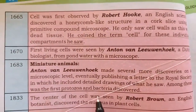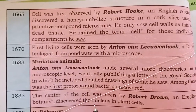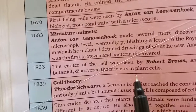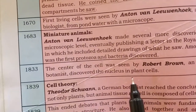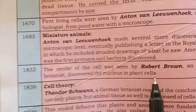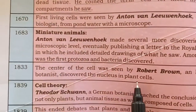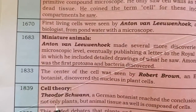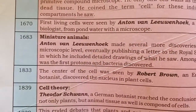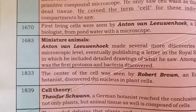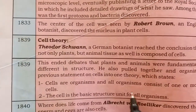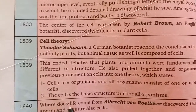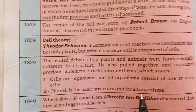In 1833, when the microscope had advanced and had double lenses, Robert Brown first observed the nucleus in a plant cell. In 1839, Schleiden and Schwann discovered that all organisms consist of one or more cells, and the cell is the basic structure of all living things.